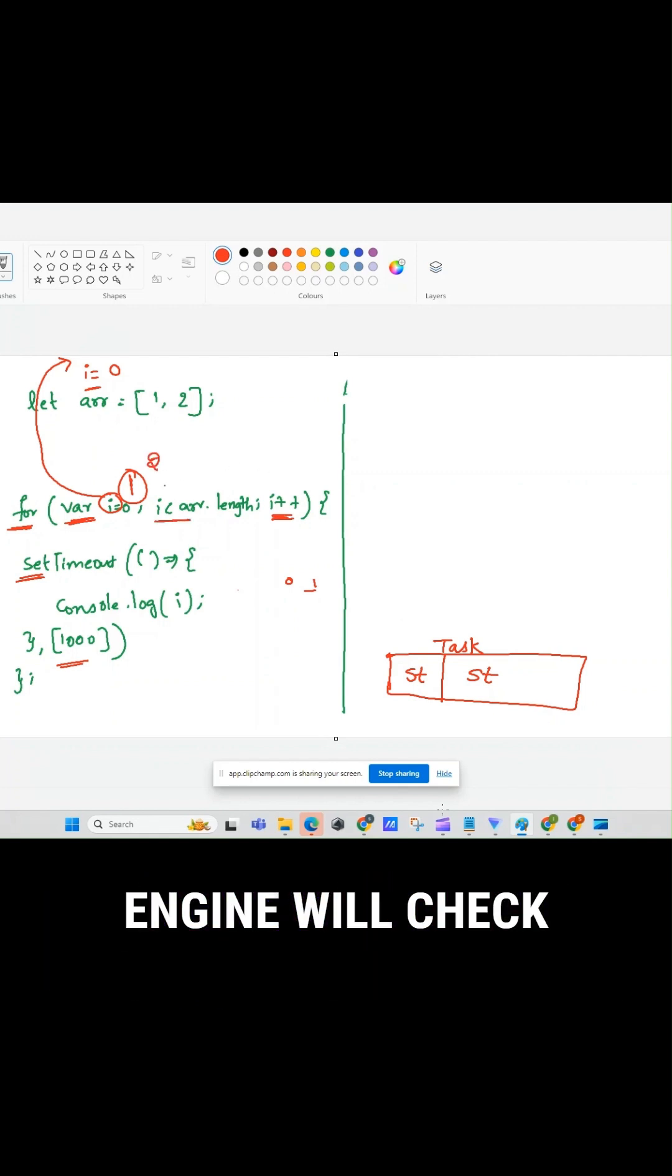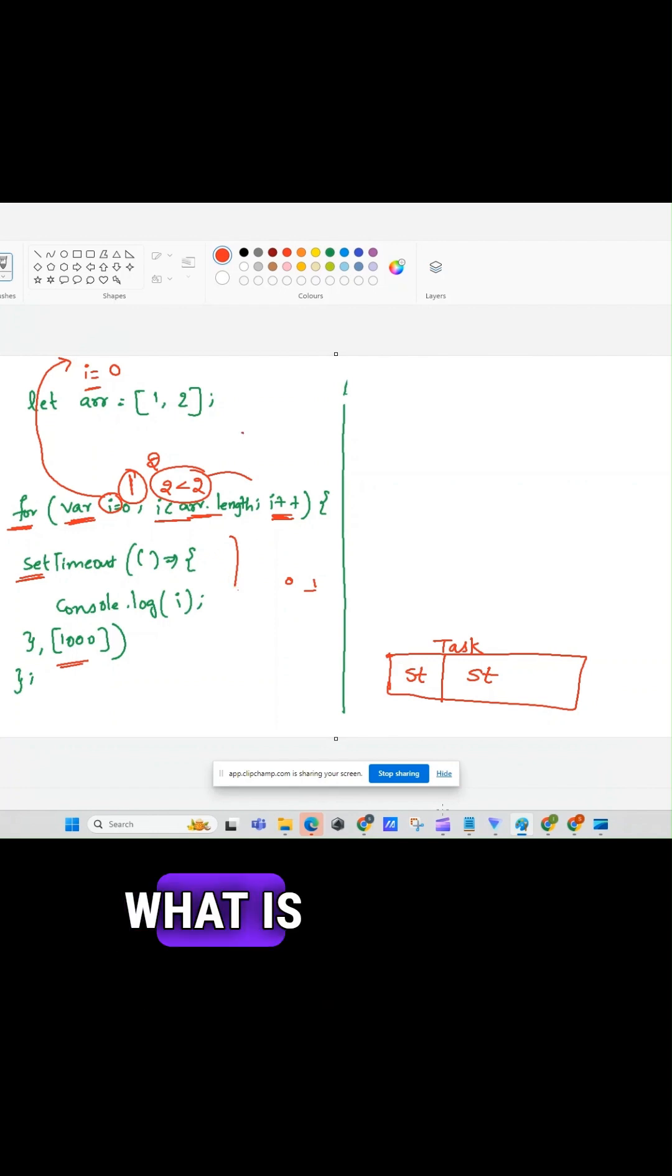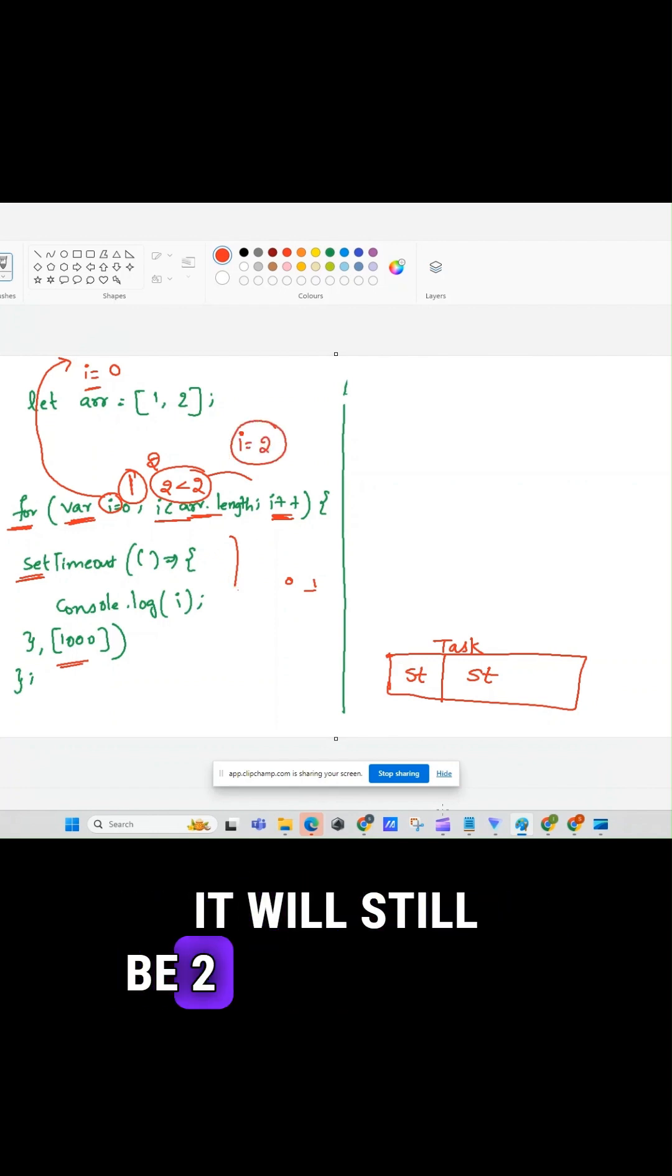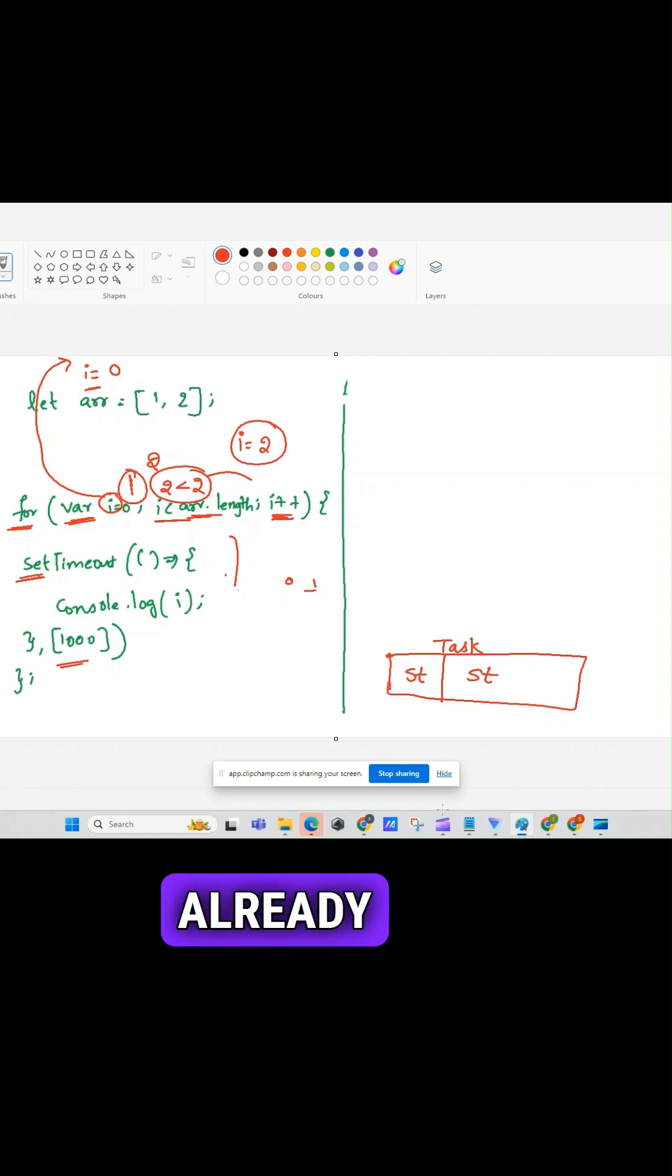So JavaScript engine will check i is less than array dot length, which is 2. It is not. This condition fails here. Due to this, it will not go inside this for loop. Remember this very carefully. What is the value of i here? It will still be 2 because even though it is not going inside this for loop, its value has already been incremented. So the current value of i will be 2 here.